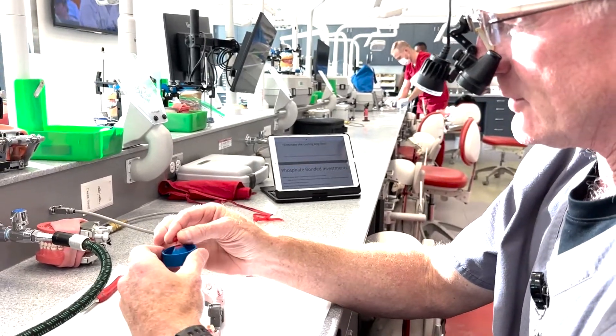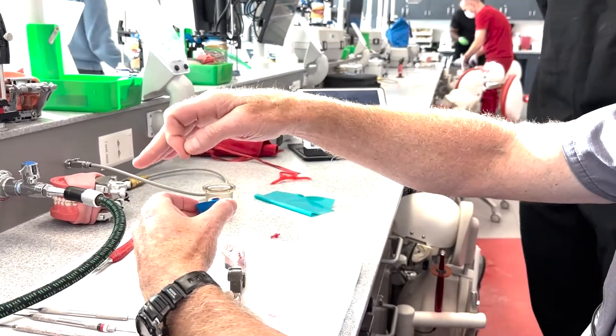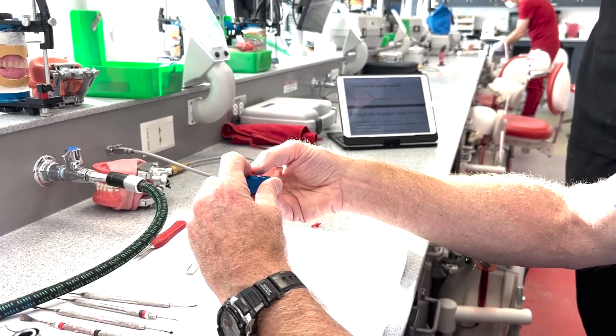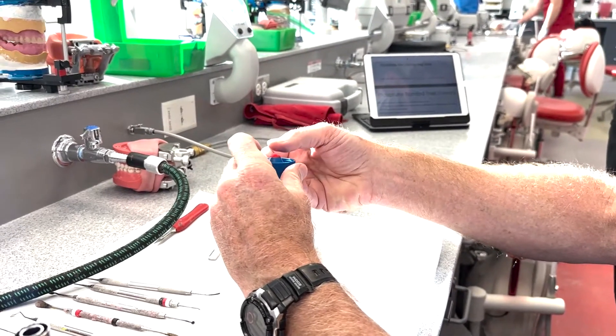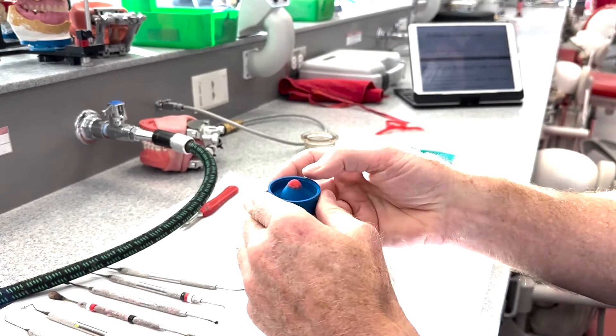Alright, so one thing I'm going to do is make this a little more convex, so it's a little more flowing. I'll add just a little bit of our rope wax there, just kind of turn that into a little bit of a dome.